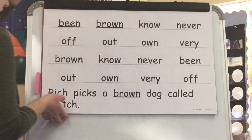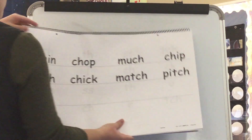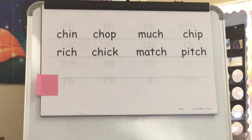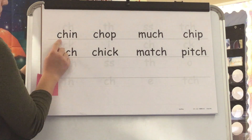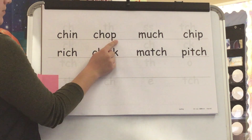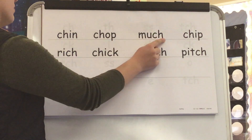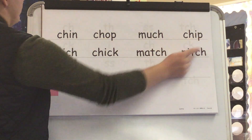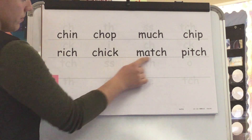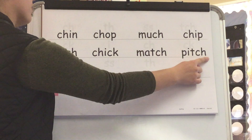Now is the time to pause your video and get out your spelling materials. All of our spelling words this week have the digraph CH or TCH. Let's read our words. Chin. Chop. Much. Chip. Rich. Check. Match. Pitch.